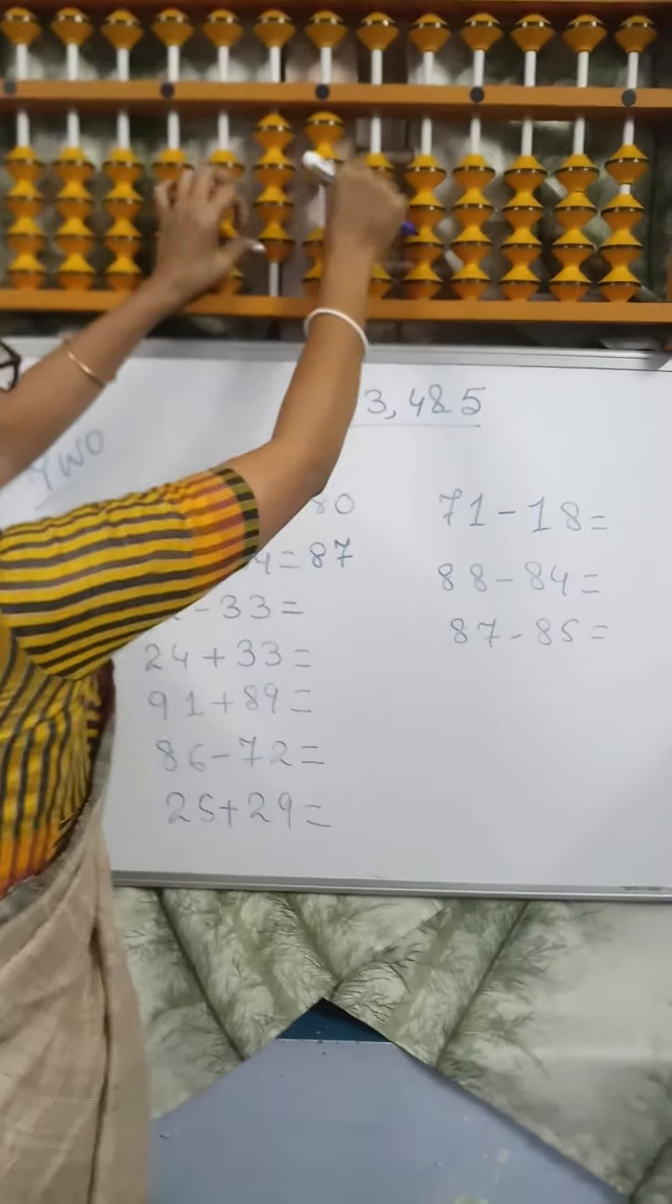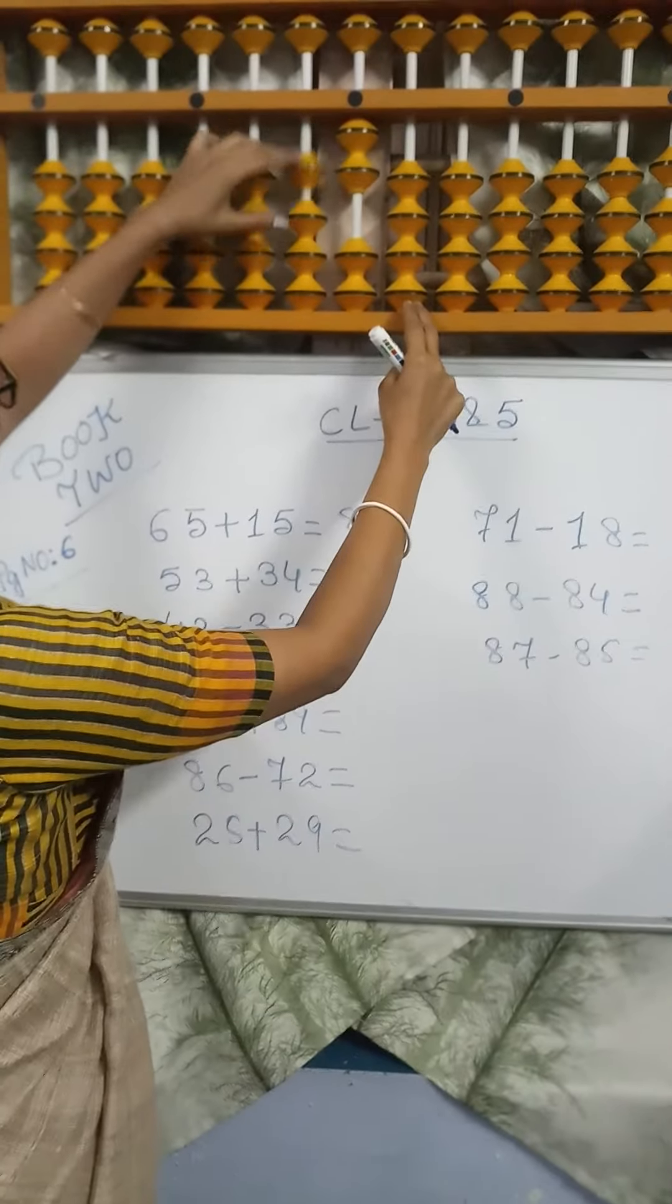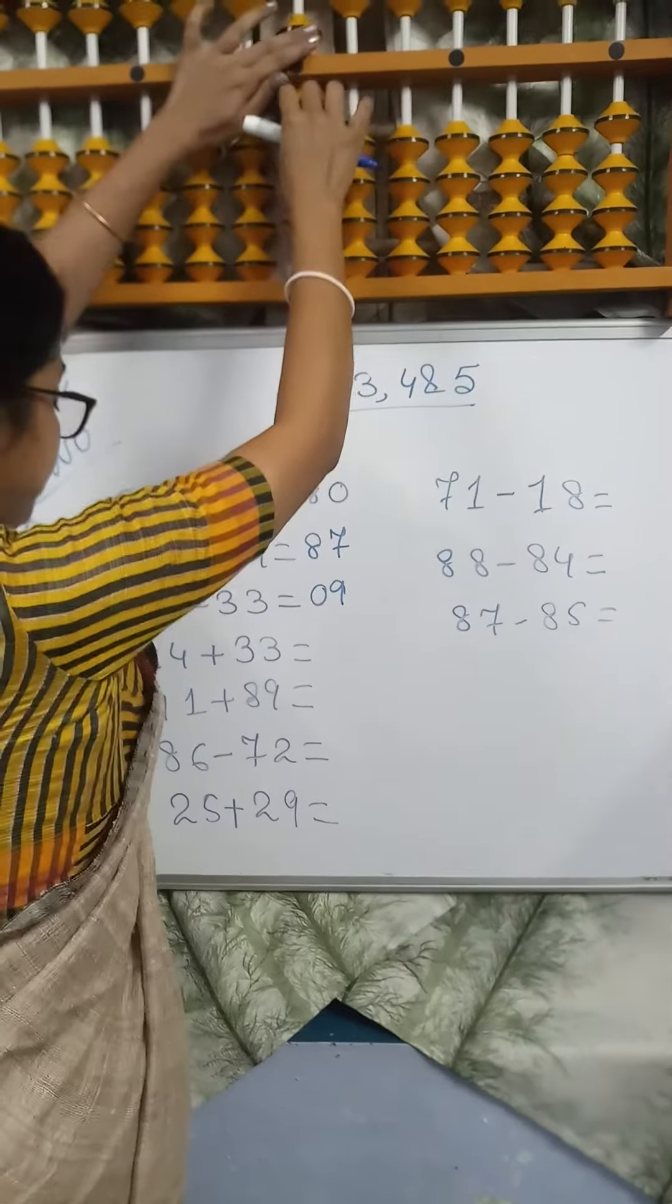42 minus 33. Minus 30, 4 minus 3, minus 10 plus 7. Answer is 09. Next sum.